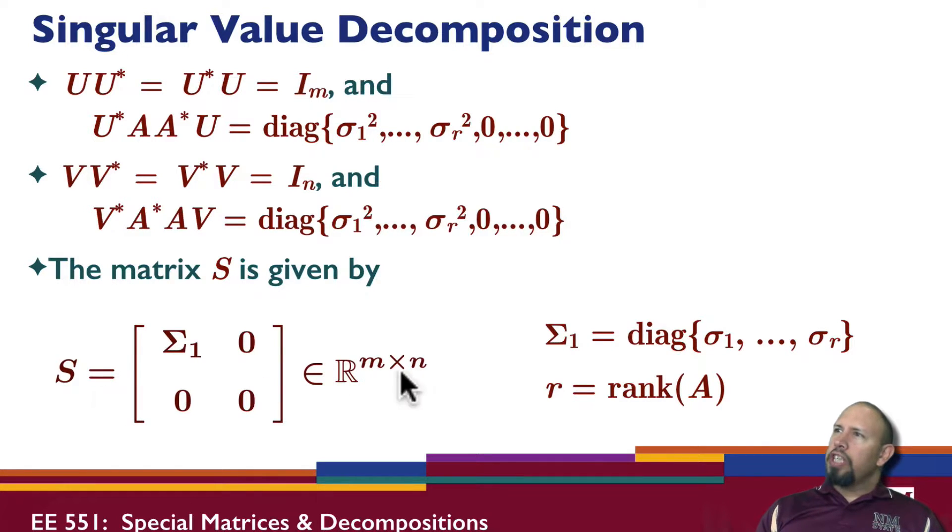So generally speaking, when we define the singular value decomposition, the singular value decomposition again has these diagonal elements. And generally, it's assumed that these singular values are ordered. That is, sigma 1 is the largest singular value. Sigma r is the smallest positive singular value. And so they're ordered in descending order. Sigma 1 being the largest, sigma r being the smallest.